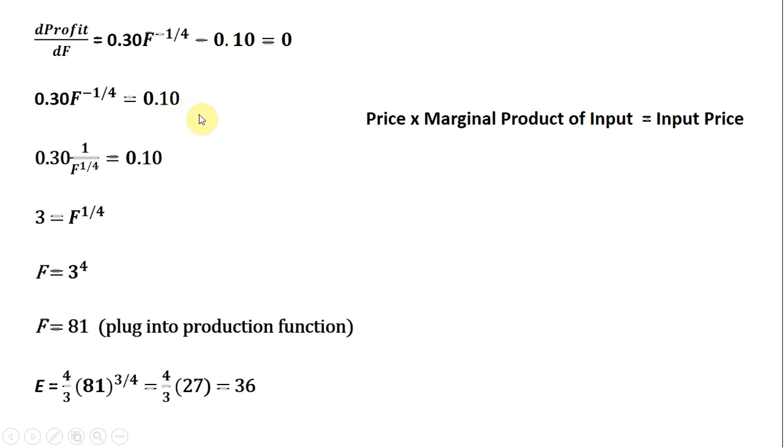and the input price is $0.10. We have the marginal benefit on the left-hand side and the marginal cost of the input on the right-hand side. We produce up to the point where marginal benefit equals marginal cost in order to maximize profit.